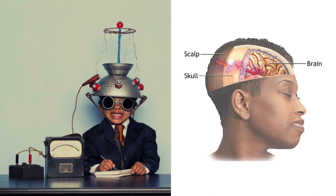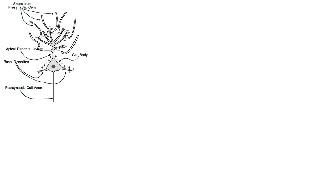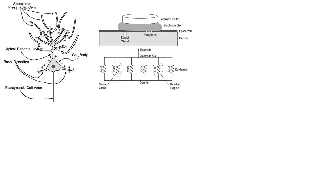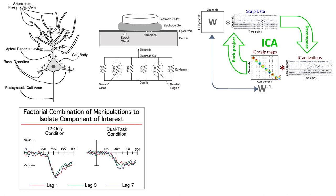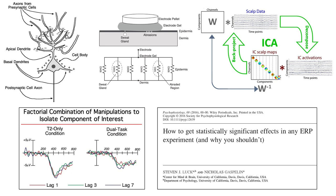And there are a lot of complicated technical issues involved in ERP research. You need to know how the electrical potentials are generated in the brain and are conducted to the scalp. You need to know how to measure the signals from the scalp and avoid contamination by artifacts. You need to know about signal processing steps like filtering, independent component analysis, and signal averaging. You need to know about experimental design issues, and you need to know how to perform statistical analyses that are unbiased and lead to replicable findings.